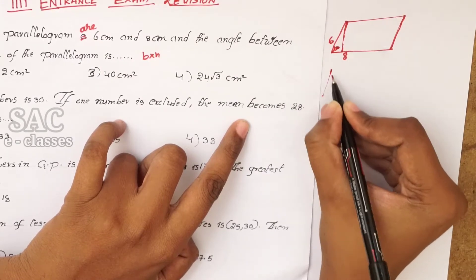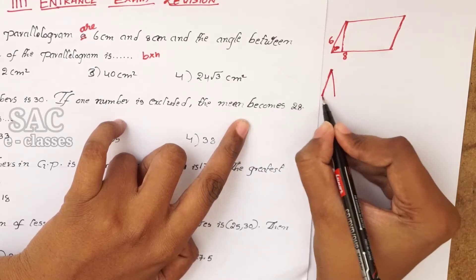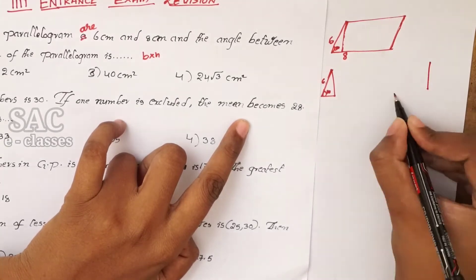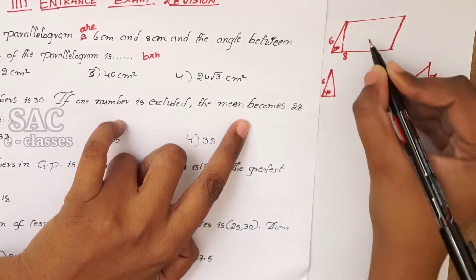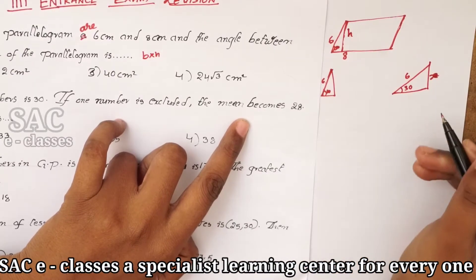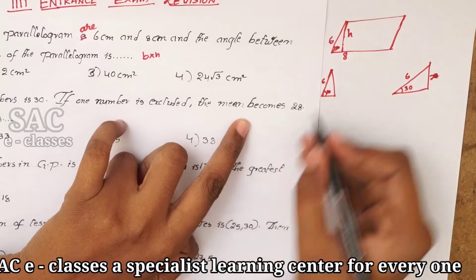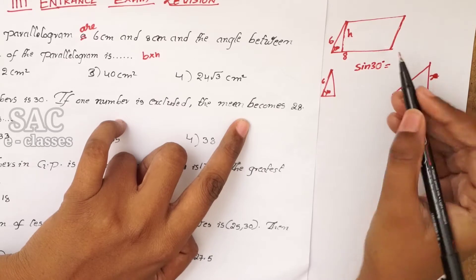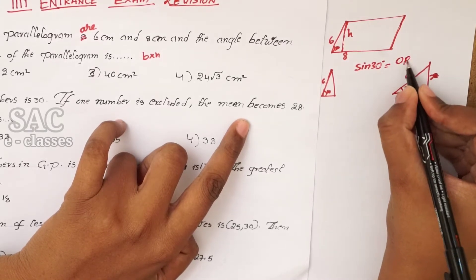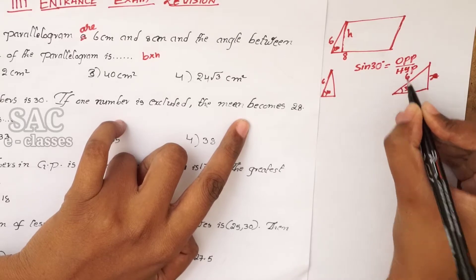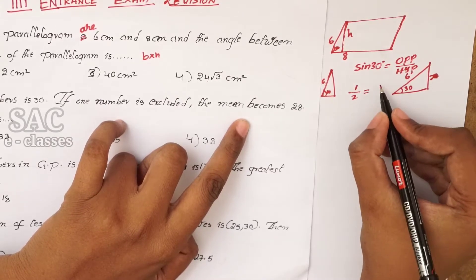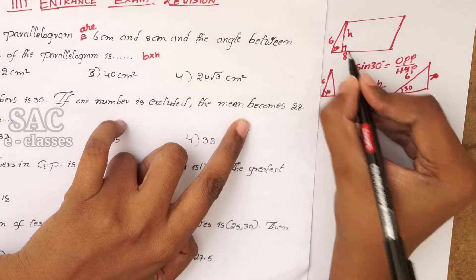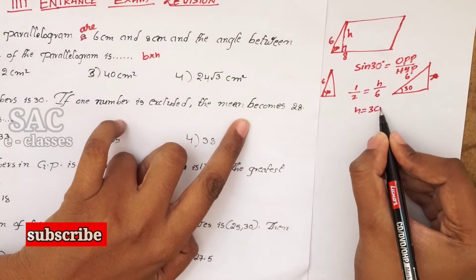We know that area of the parallelogram is base into height. To find the height H, use sin 30°. Sin 30° equals opposite over hypotenuse, so 1/2 = H/6, because we draw a perpendicular to the side of 6 cm. Then H is equal to 3 cm.